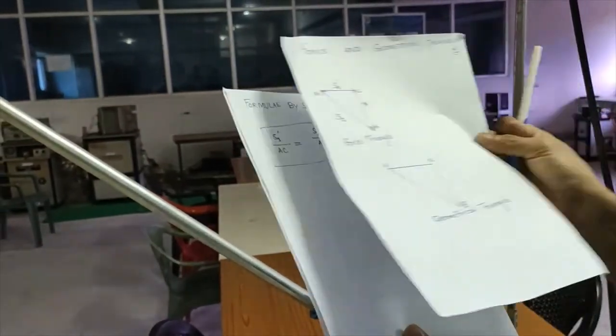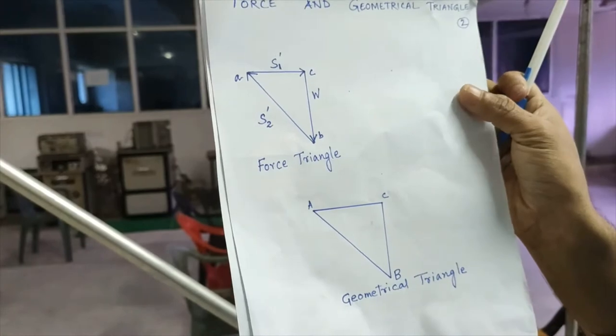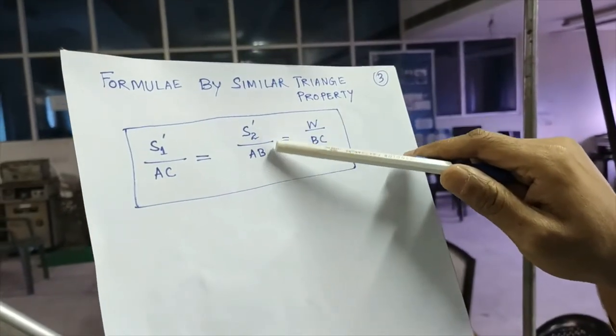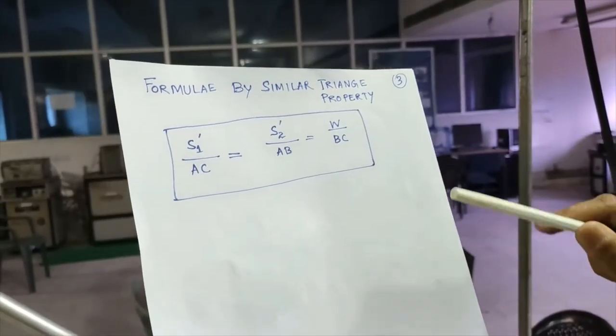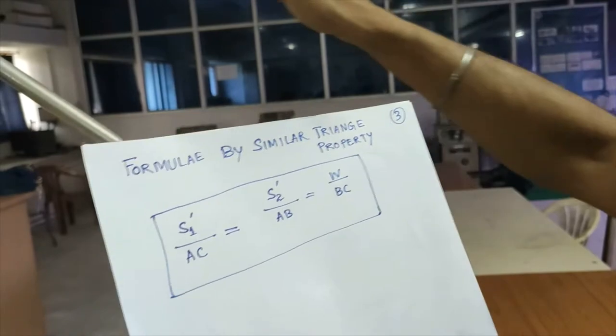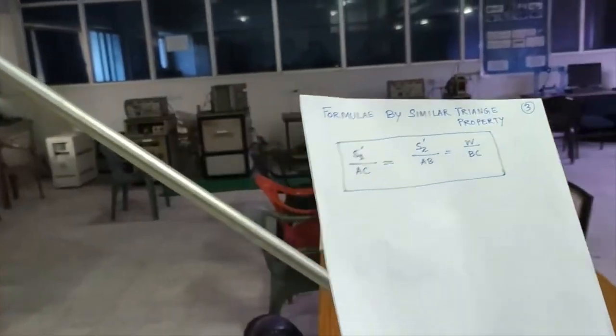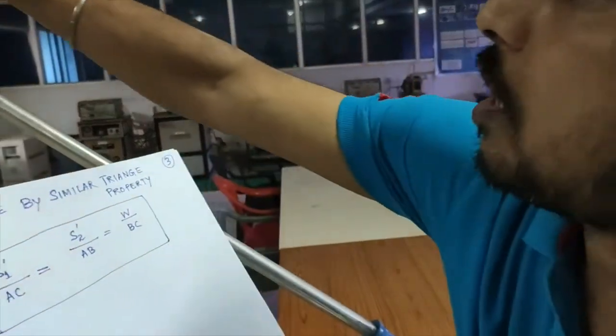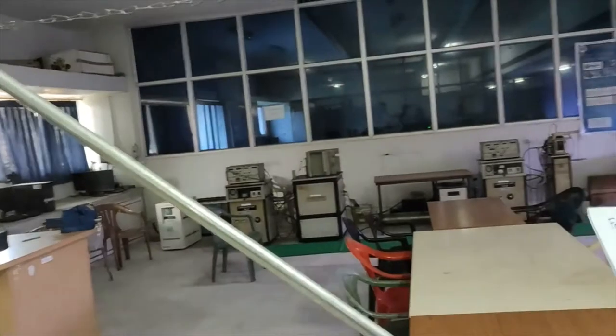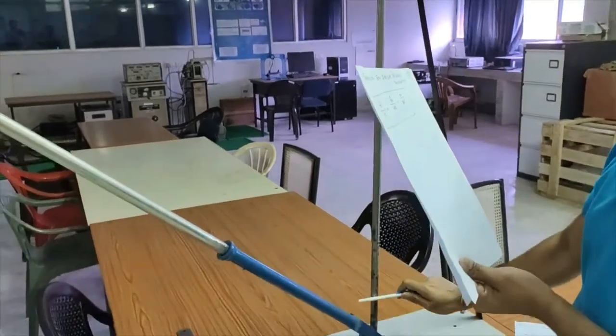These two triangles, force triangle and geometrical triangle, would be similar triangles. As per similar triangle property, S1 dash divided by AC is equal to S2 dash divided by AB is equal to W by BC. Where AC, this is the AC, that means the length of the tie member under loaded condition. This is BC, BC means the length of the vertical post under loaded condition.